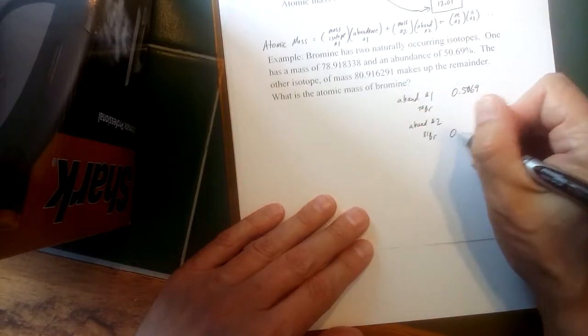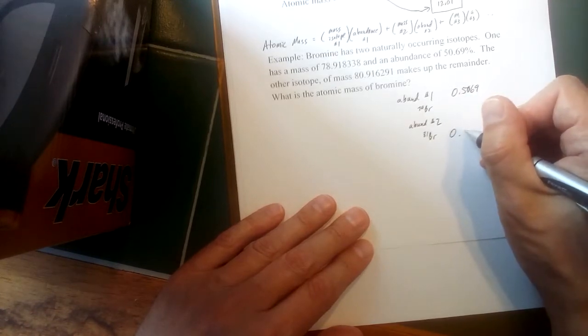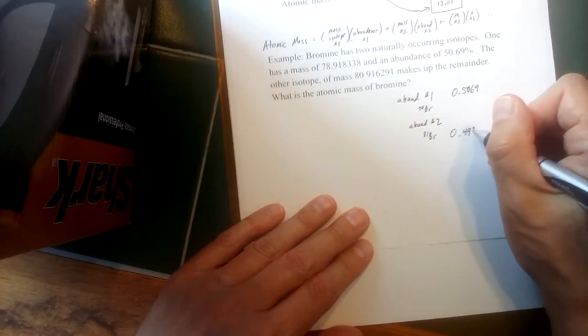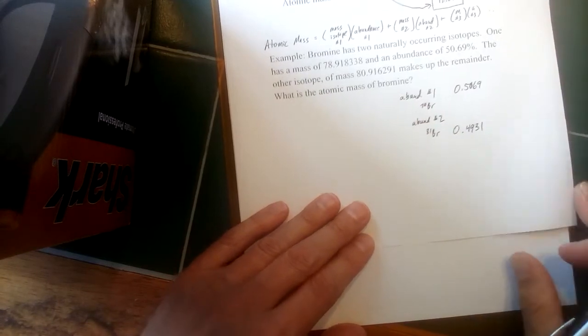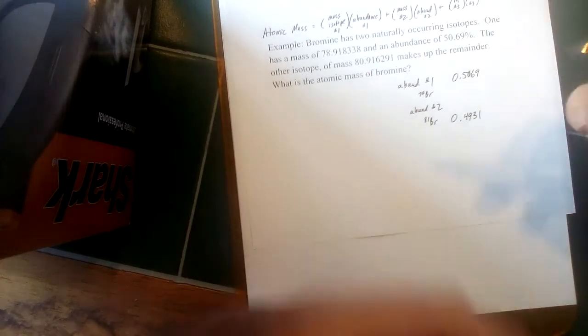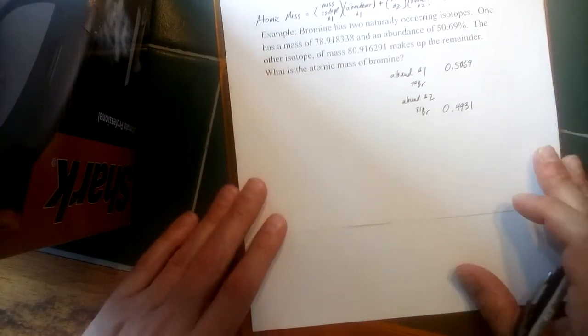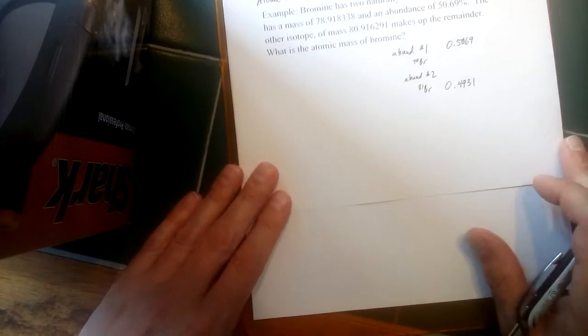Which would be 0.4931. Now that's not uncommon if there's a second isotope—you're just not told its abundance because that's a kind of a simple math exercise to figure out what the abundance of the second isotope would be if you already know the first.